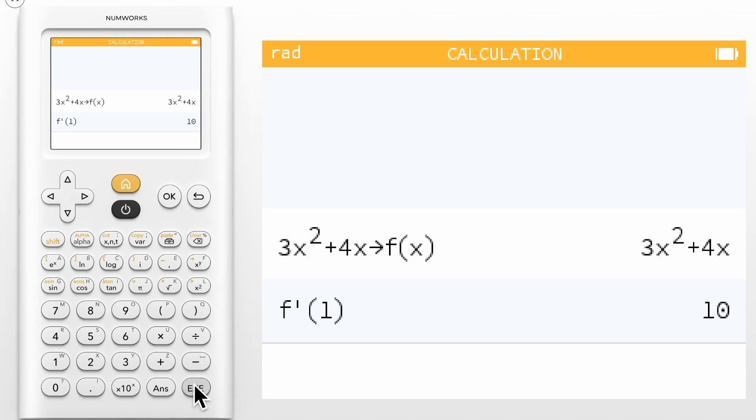You can use the alpha and toolbox key combination to add additional prime marks to compute higher order derivatives as well. Let's navigate up and press ok to copy our previous entry and add an additional prime mark to find the second derivative.